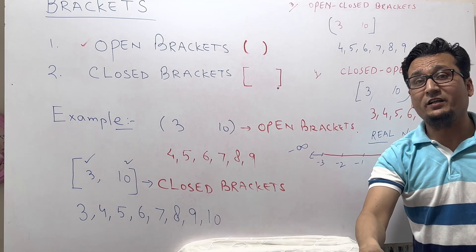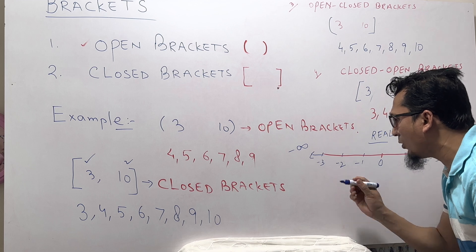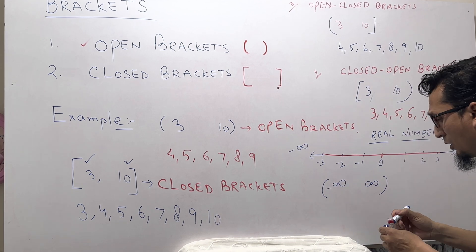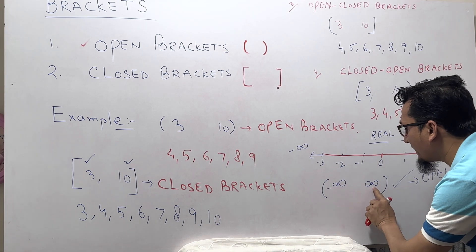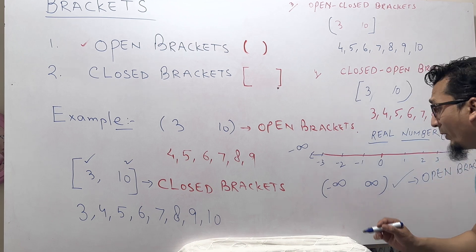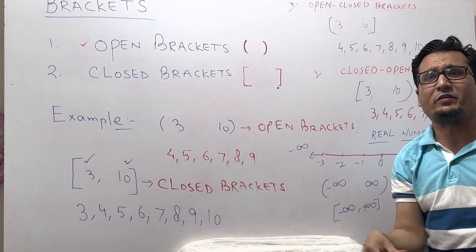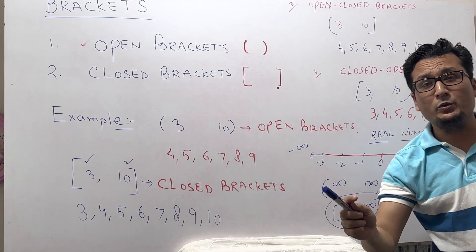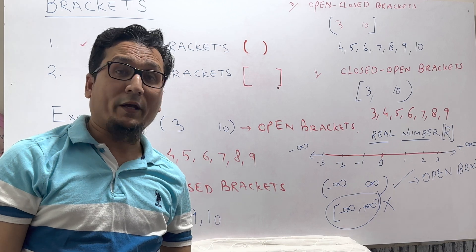Because we don't know the location of infinity — whether positive or negative — we always use the open bracket whenever we use minus infinity or positive infinity. Always use the open bracket. It means we are not going to include infinity, because its location is not fixed. For example, writing (−∞, +∞) with a closed bracket would mean you're including positive infinity, which is 100 percent wrong. So remember: whenever we use positive or negative infinity, we always use the open bracket — never the closed bracket.